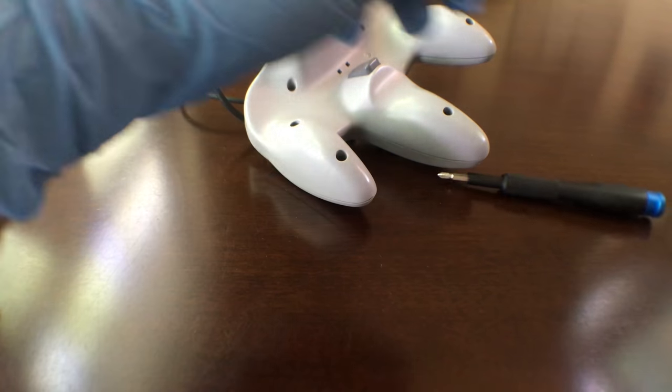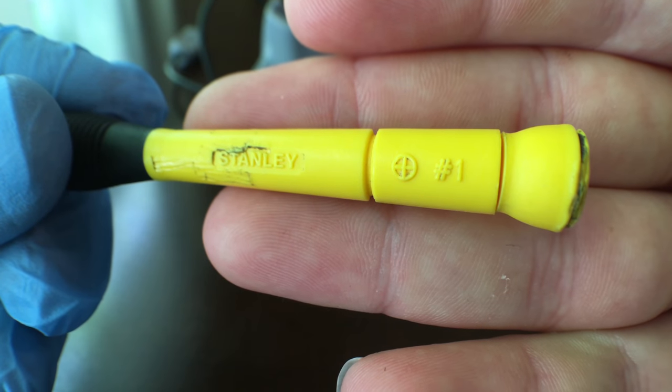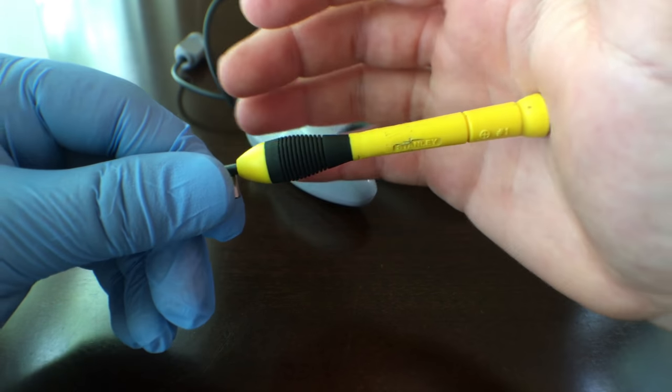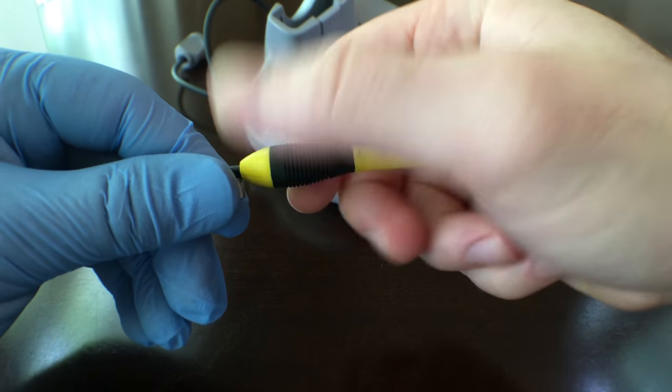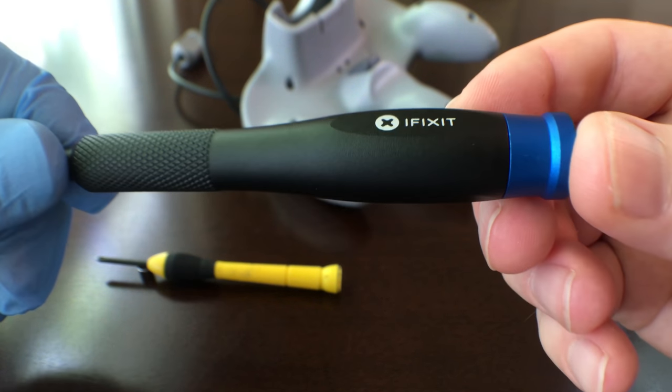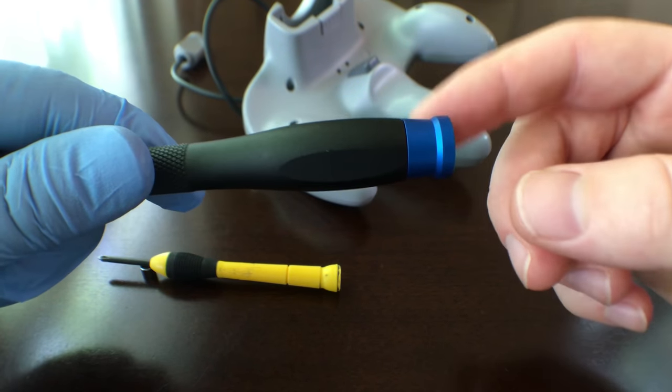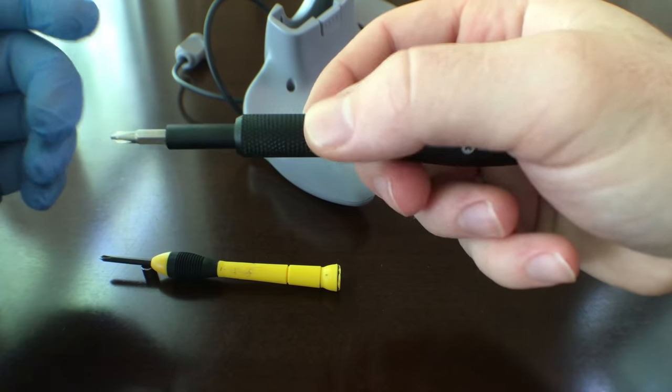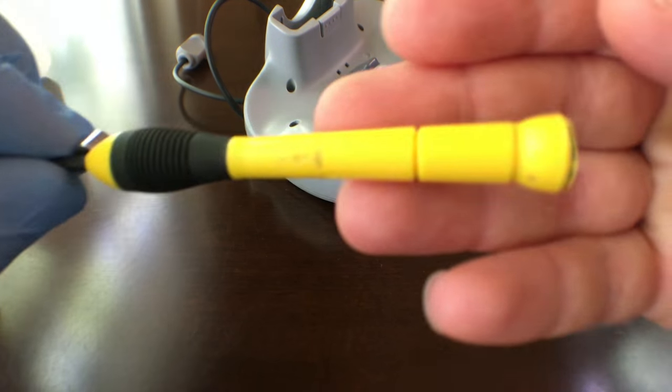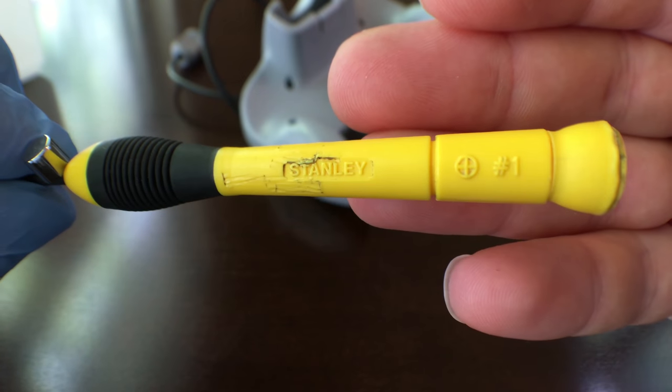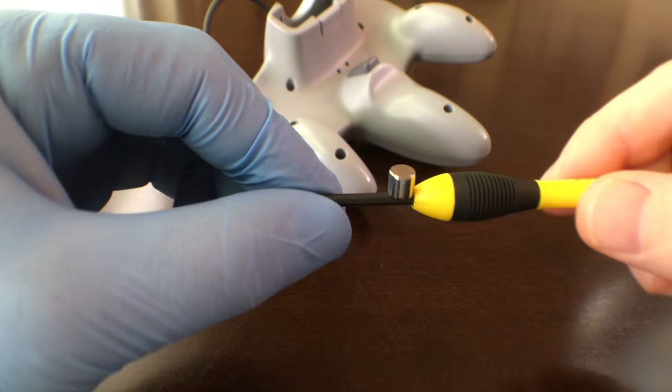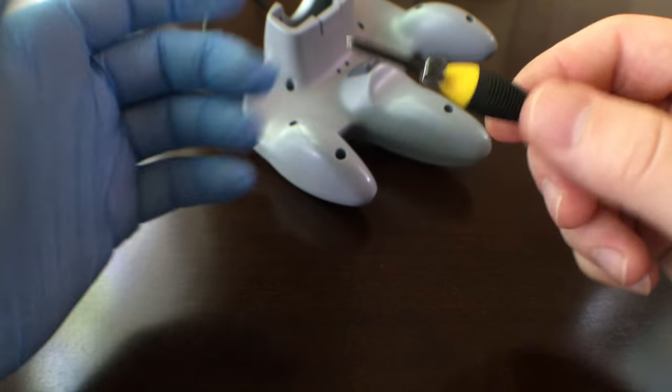For this, you're going to want to use a number one Phillips driver, preferably one that has a little spinny thing on the top, something you can put pressure on and spin at the same time. iFixit has some really nice drivers with the spinny thing on top. But for a couple bucks at Walmart, you can get a full set of these and they work just as good. The only difference is they're not magnetic, so I have a little magnet on here to help.